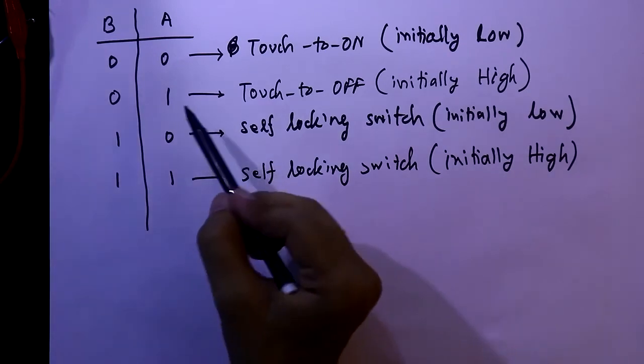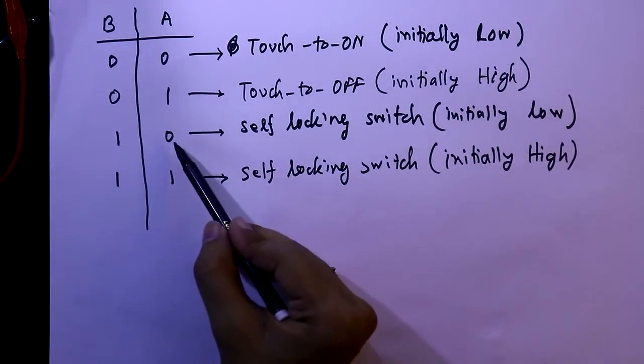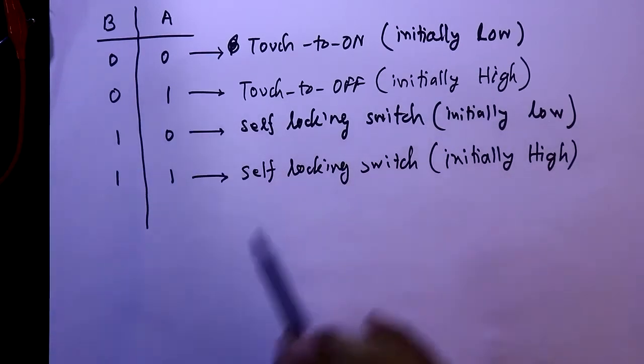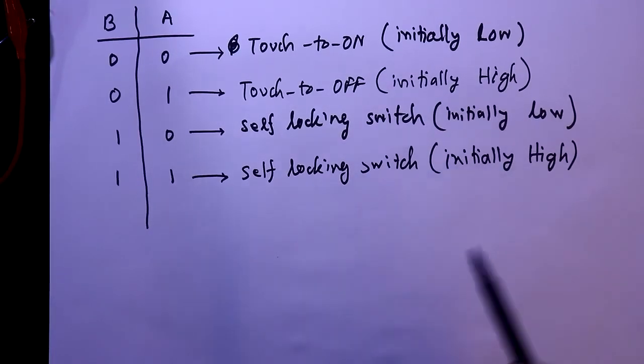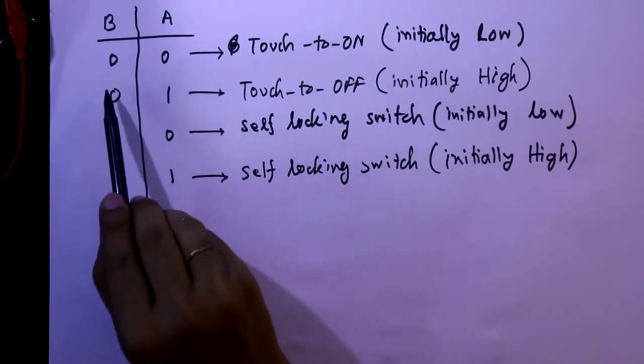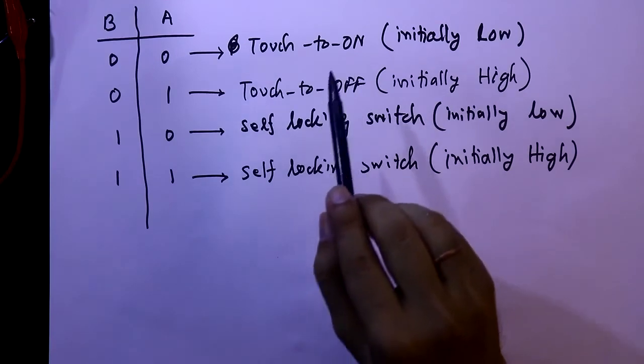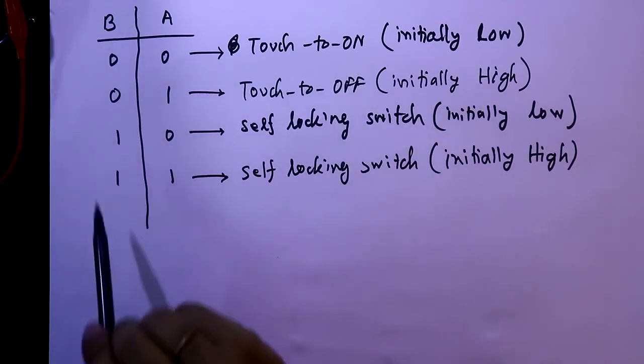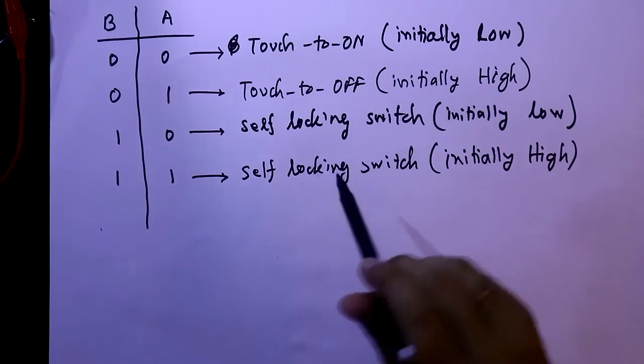Whenever A is 0, the initial condition is low for this case also. And whenever A is 1, then the initial condition will be high for both the cases. And whenever B is 0, then the module will work as a push button switch, whether it is push-to-on or push-to-off. And whenever B is 1, then it will work as a self-locking switch, whether it is initial low or high.